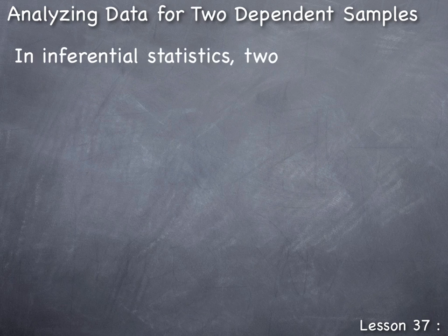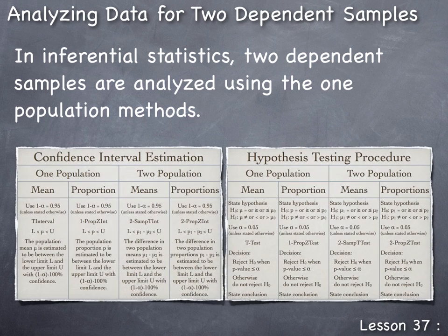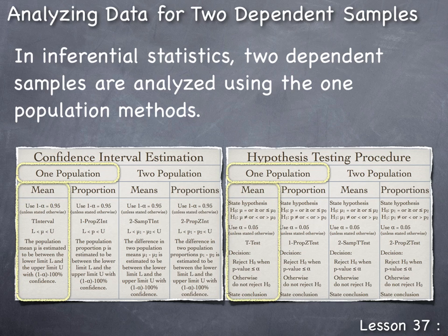In inferential statistics, two dependent samples are analyzed using the one population methods. Even though we have two sets of data in the two dependent sample case, these two sets of data were collected from the same sample subjects, where this one sample of subjects was collected from one population. Thus the confidence interval estimation and hypothesis testing procedures for one population is the appropriate analysis to conduct. Due to the type of data collected with two dependent samples, only the methods involving the means would apply.